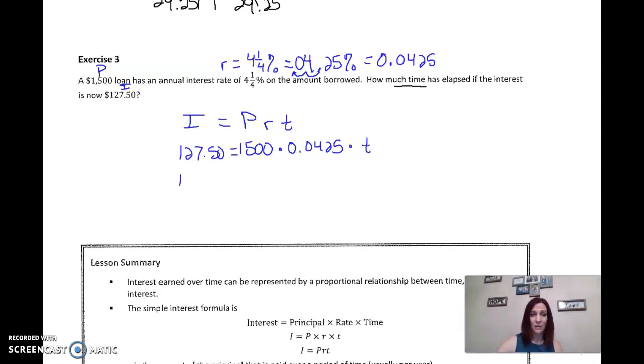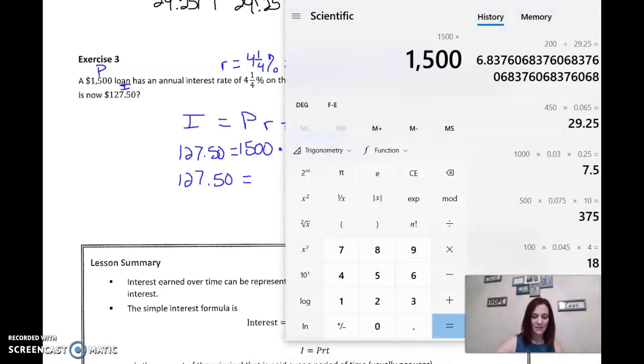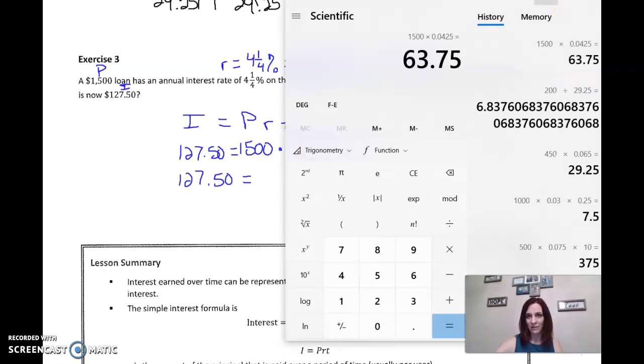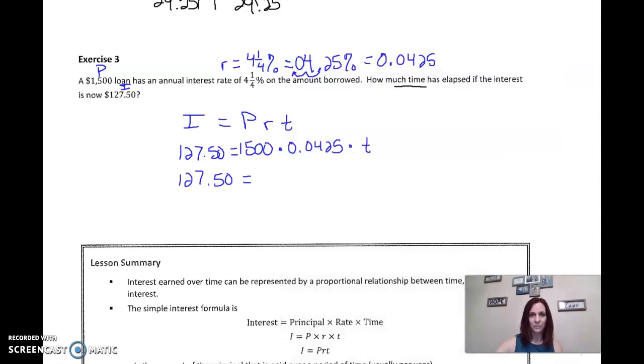So simplify and solve. 127.50. And I'm simplifying this side. It's 63.75. That's when I multiply these two things together. Times T. I'm solving for T. I have to get rid of the 63.75. It's multiplying. We undo that with division. So I divide both sides by 63.75. That cancels out to give me one T equals.